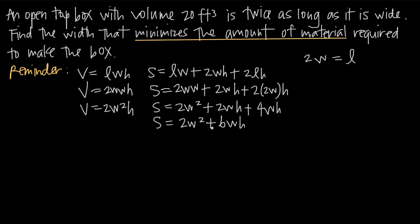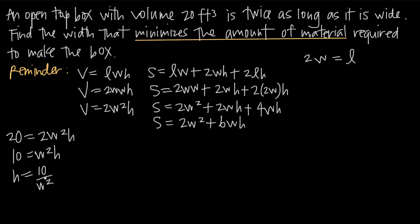Now we have both formulas in terms of only width and height, but we need surface area in terms of one variable. The problem states the volume is 20 cubic feet, so we plug in: 20 = 2w²h. Dividing both sides by 2 gives 10 = w²h. Dividing both sides by w² gives h = 10/w². Now we have a value for h to substitute into the surface area formula.